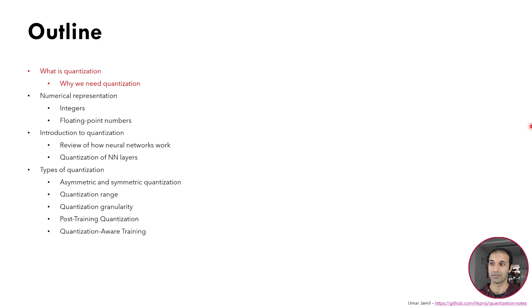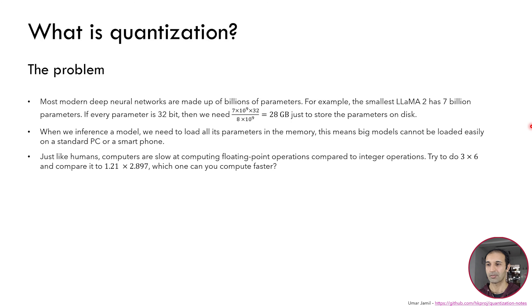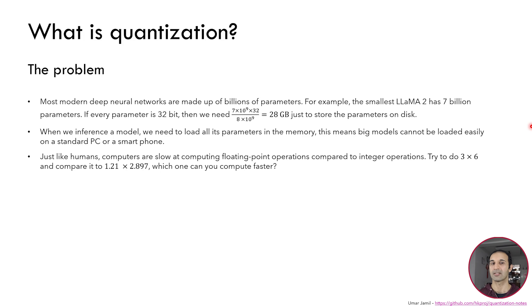Let's see what is quantization first of all. Quantization aims to solve a problem. The problem is that most modern deep neural networks are made up of millions if not billions of parameters. For example, the smallest LLaMA 2 has 7 billion parameters. Now if every parameter is 32-bit, then we need 28 gigabytes just to store the parameters on disk.